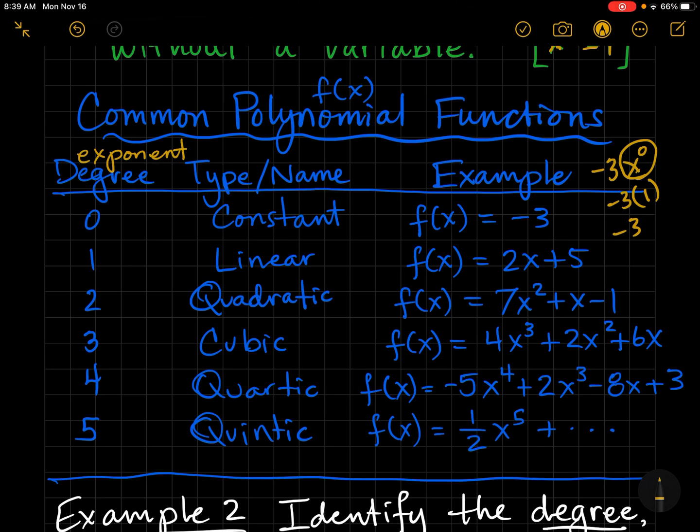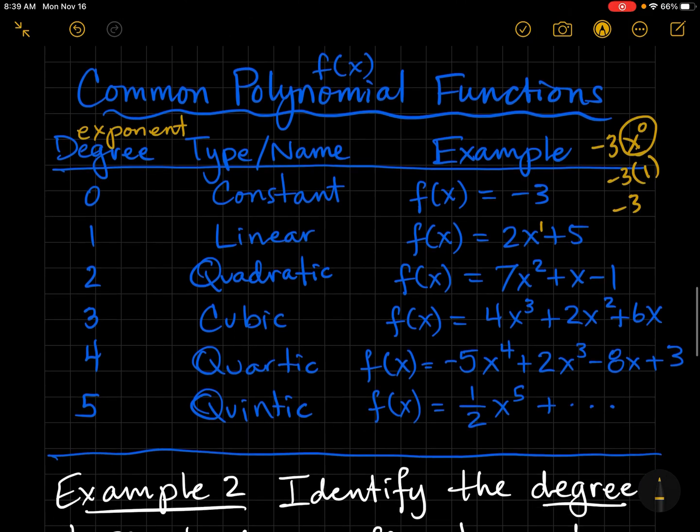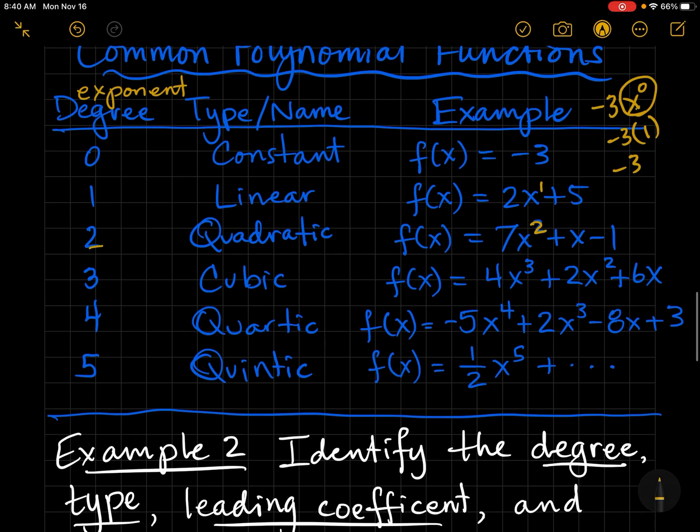Now, if you look down our list, if the highest exponent is one, we consider this a linear function. The highest exponent is two, then that's a quadratic, and we just spent two chapters going over quadratic functions, so you should be very familiar with that. Cubic function has the highest exponent of three.